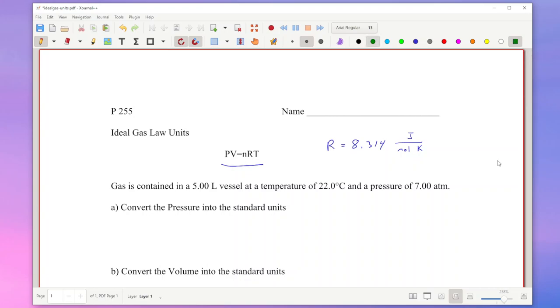In contrast, when you get a problem, you might not have things in the correct physics units. You might be given things in liters and in Celsius and in atmospheres. So in this example problem for my students, we're actually going to go through and talk about what you have to do to convert these into the standard physics units to be able to solve the problem.